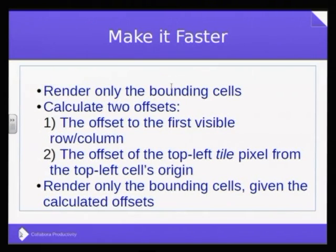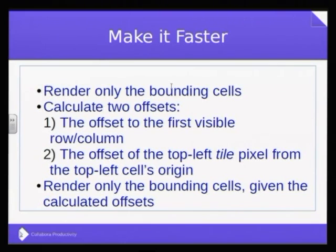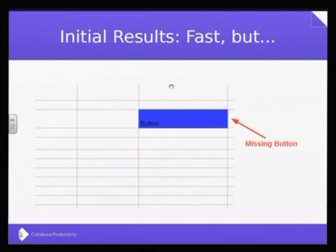Here is an approach: why not do something similar to what the desktop does — just render whatever you really need to show on screen. To do that, figure out your actual offset. You need two offsets, because for tile rendering the tile can start at any random place in the spreadsheet, so there's no clean boundary. You need to figure out the first visible column and row, and then your pixel offset within those row and column boundaries. Then you render those cells and cut the part you're interested in — that's your PNG image sent to the browser.